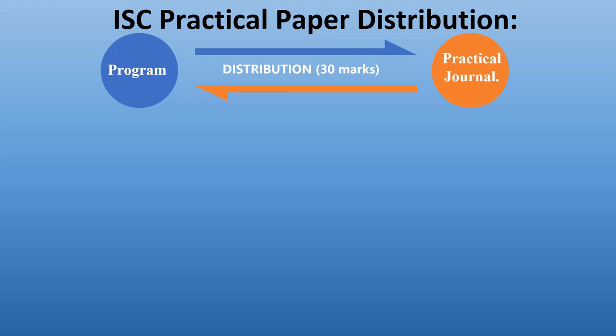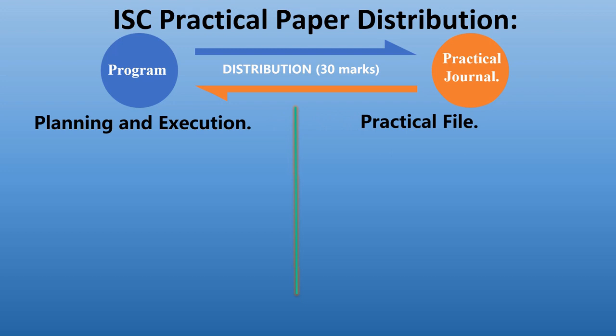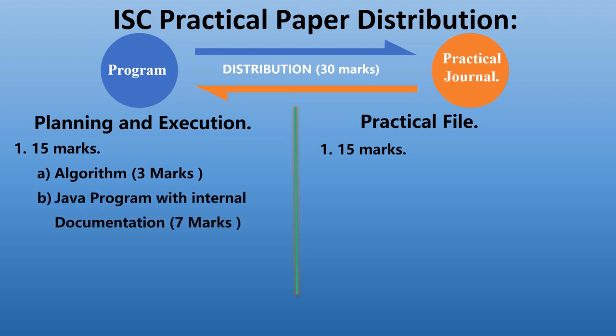Now let's look into the mark distribution — how those 30 marks of the practical paper are distributed. They are distributed into two parts: planning and execution, and the practical file — each carrying 15 marks. Under planning and execution: three marks are allotted to the algorithm; the Java program with internal documentation carries seven marks — by internal documentation, this means the comments and the variable description table. The hard copy or printout of your program carries two marks.